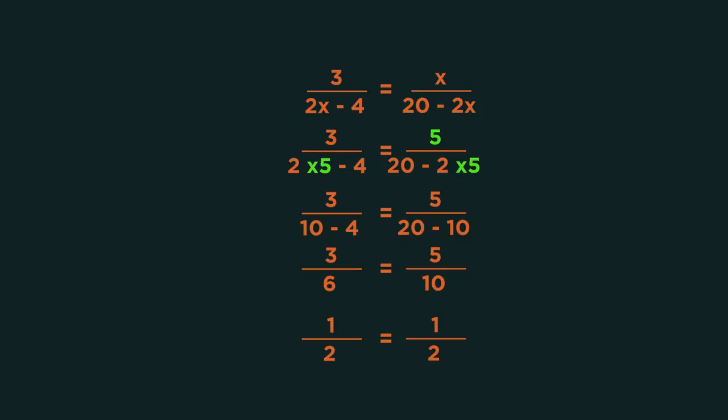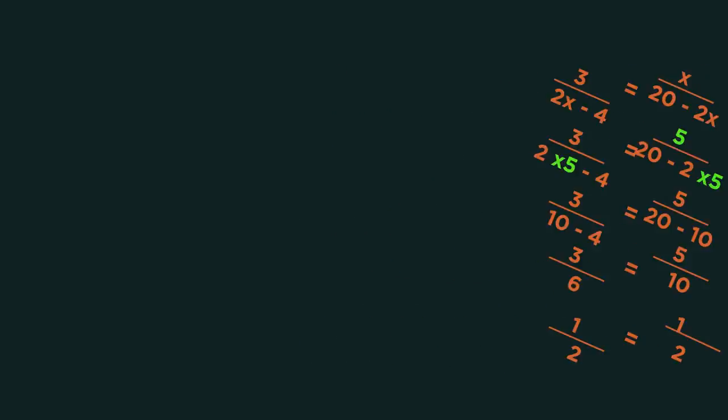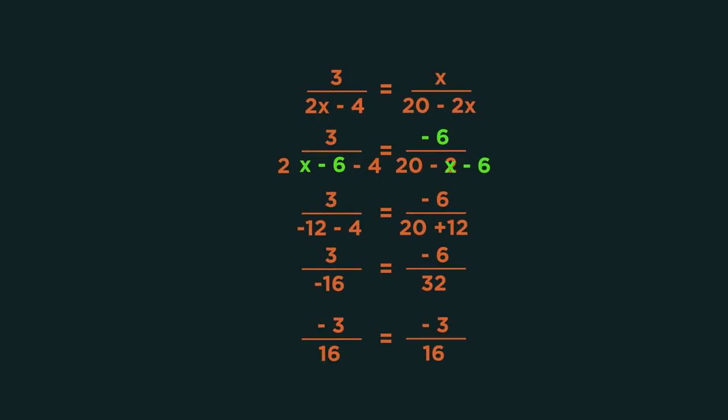So if we substitute x is 5 into the original question, we get 3 over 6 equals 5 over 10. So a half equals a half, which means 5 is the correct answer. We should also do the same for x is negative 6.